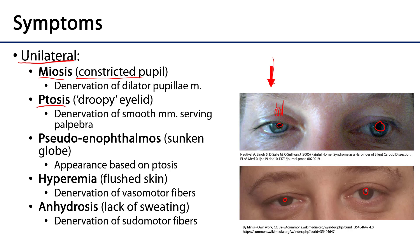The next symptom is more of a consequence of ptosis, and that's pseudoenophthalmos, which means a pseudo sunken globe. When the eyelids become droopy it gives the eyes an appearance of being sunken.